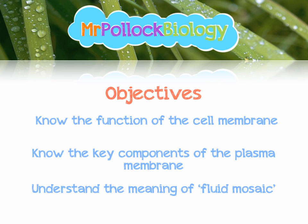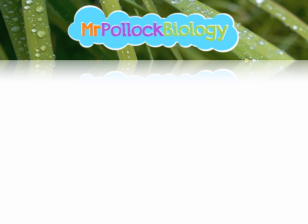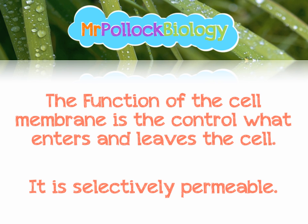Let's get started by talking about the function of the plasma membrane. Basically, it serves as a boundary between the outside environment of the cell and the inside environment of the cell, and it controls what enters and leaves the cell. We say that it's selectively permeable because it can control exactly what comes in and exactly what leaves, and it can have a little bit of regulatory control over the amounts of stuff entering and leaving as well.